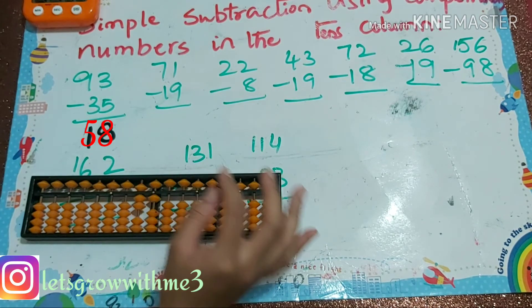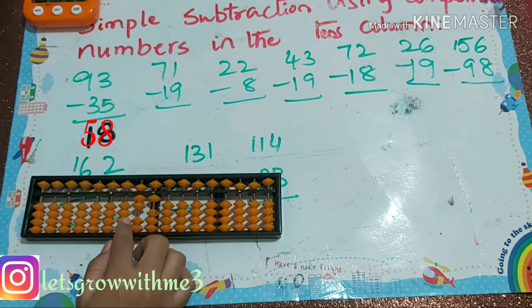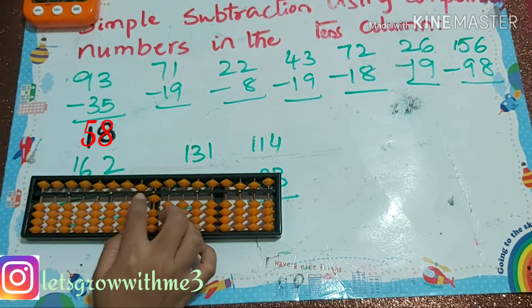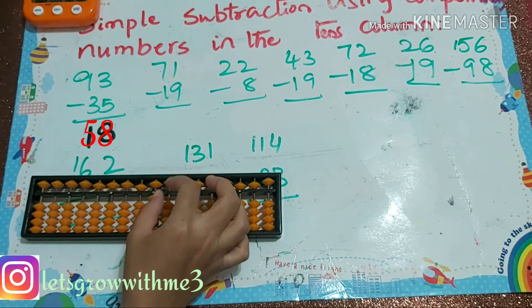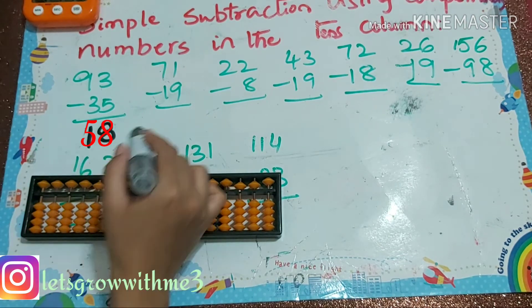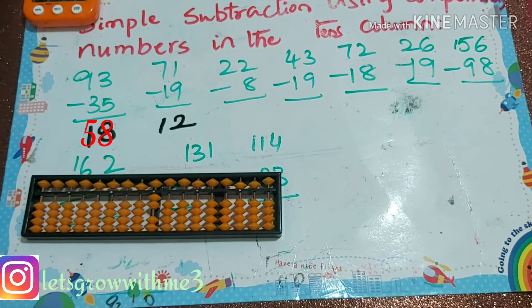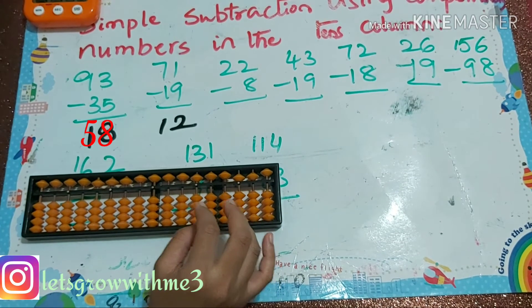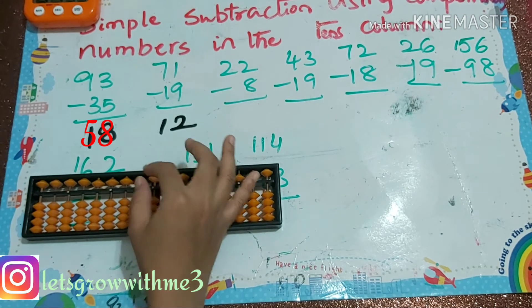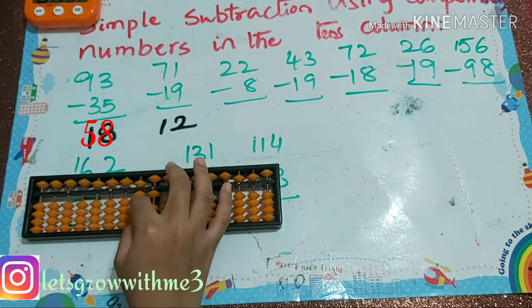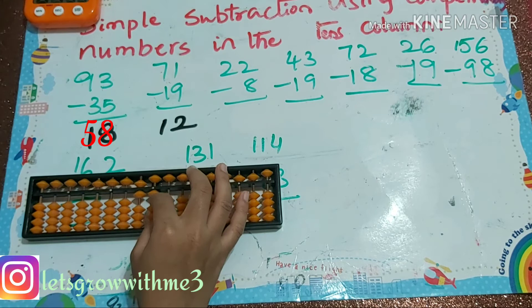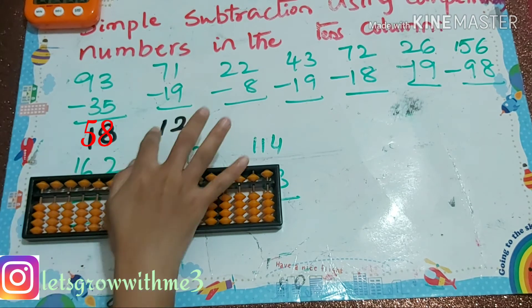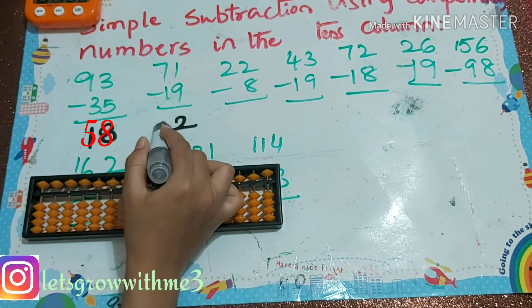Next: 71 minus 19. Minus 1, and minus 9 — how to do minus 9? Minus 10 plus 1. Our answer is 52.